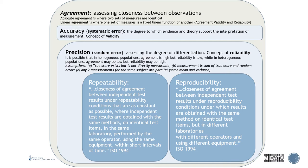Under linear agreement there's a combination of agreement validity and reliability. Agreement validity asks: are you measuring what you intended to measure? Reliability is the ability to measure consistently. Under agreement come two big concepts: accuracy, which deals with systematic error, and precision, which deals with random error.